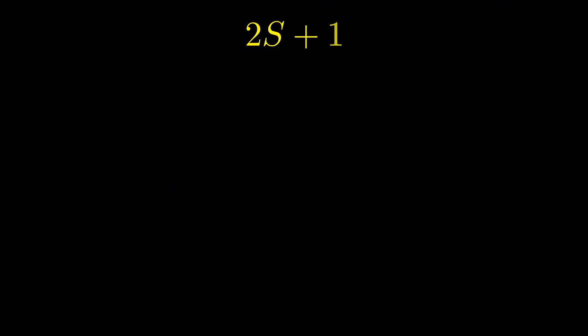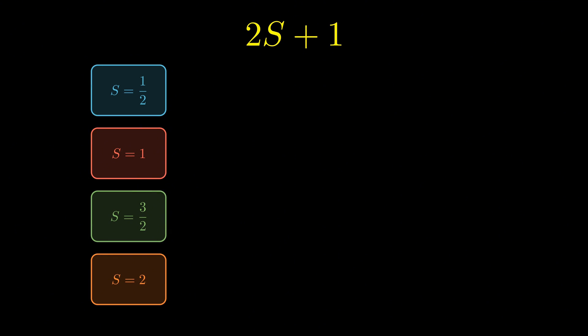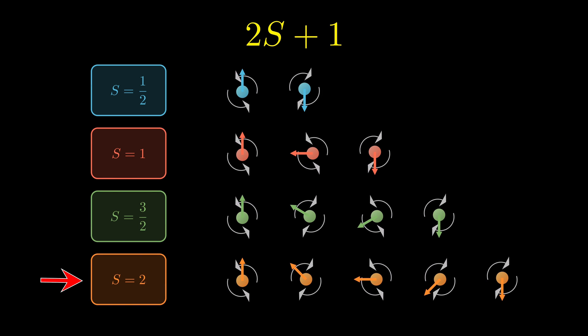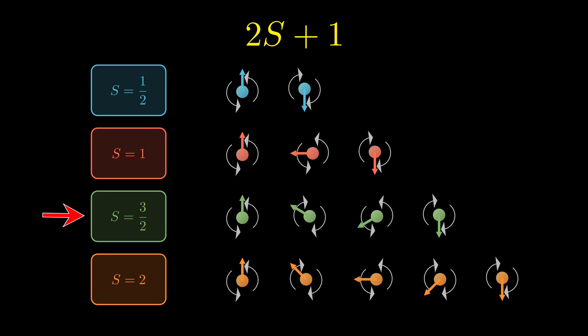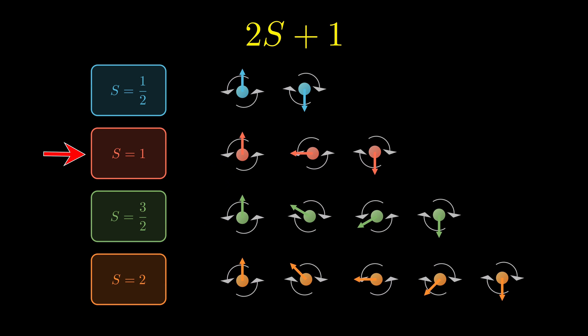In fact, for any particle with spin s, the total number of possible energy states is given by a simple formula. So, a spin two particle has five energy states. Spin one and a half has four states. And spin one has three states. And now you can already see where we're heading.